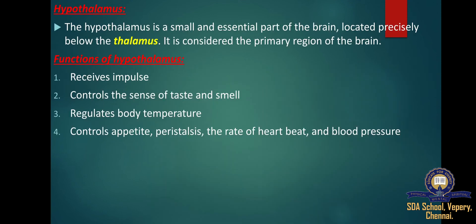The hypothalamus is a small but essential part of the brain located precisely below the thalamus. It is considered a primary region of the brain and is involved in the following functions: receiving impulses, regulating body temperature, controlling mood and emotions, controlling the sense of taste and smell, synthesizing the body's essential hormones, coordinating messages from the autonomic nervous system, and controlling and regulating the rate of heartbeat and blood pressure.